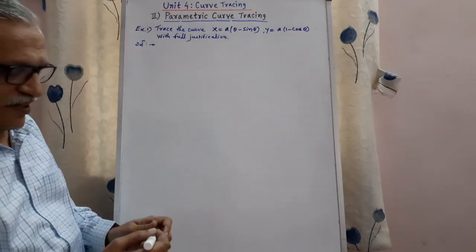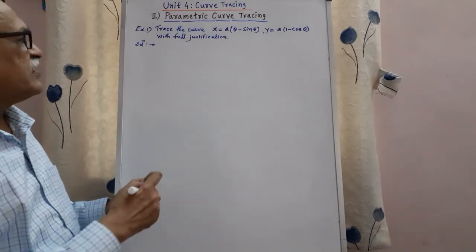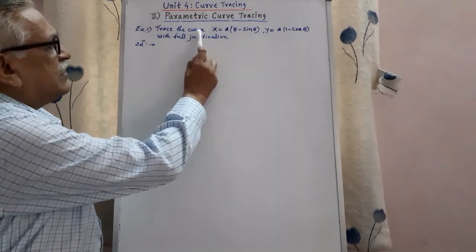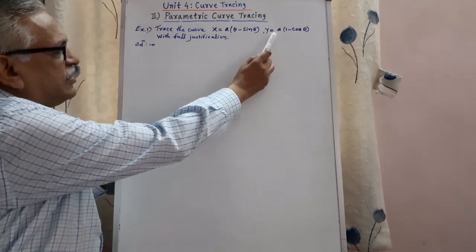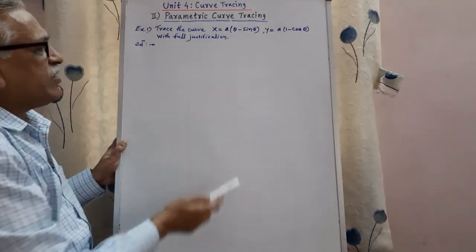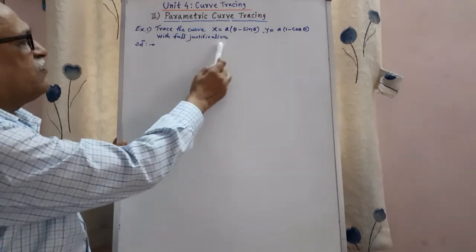on parametric curve tracing. Let us see the next example. Trace the curve x equals a theta minus sine theta and y equals a into 1 minus cos theta with full justification.